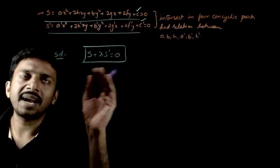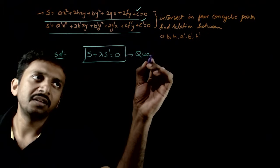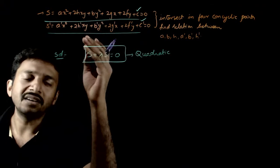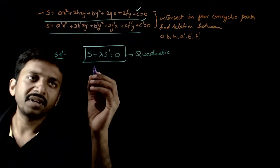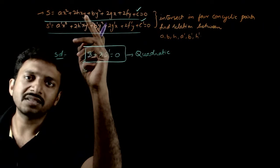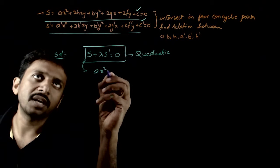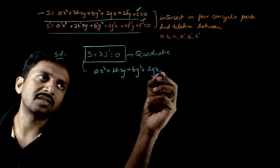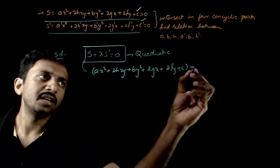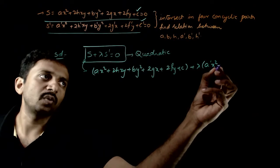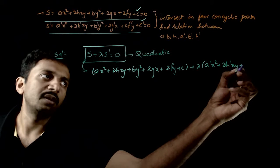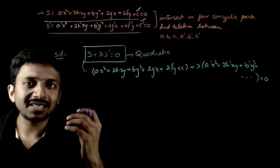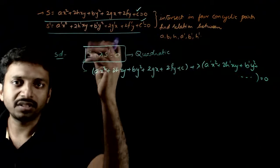So, S + λS dash = 0 gives a second degree equation in X and Y. Any curve passing through the intersection of these two curves is: Ax² + 2HXY + BY² + 2GX + 2FY + C + λ(A dash·X² + 2H dash·XY + B dash·Y² + ...) = 0.